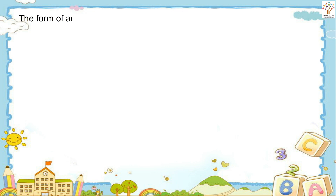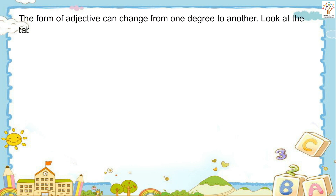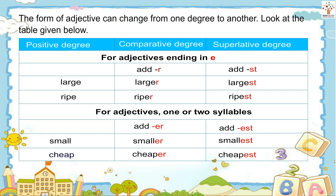The form of an adjective can change from one degree to another. Look at the table given below: positive degree, comparative degree, superlative degree. For adjectives ending in E — add R, add ST. Examples: large, larger, largest; ripe, riper, ripest.